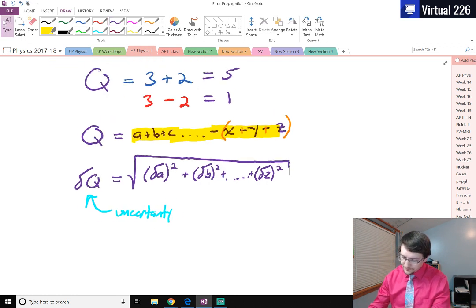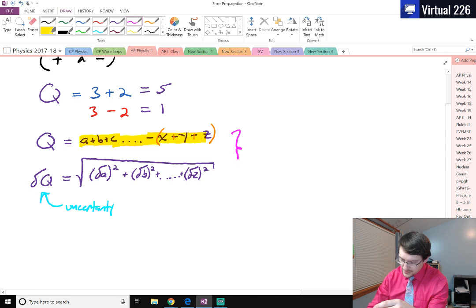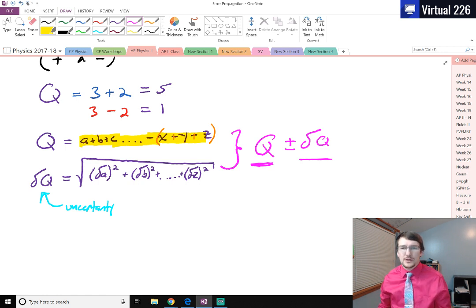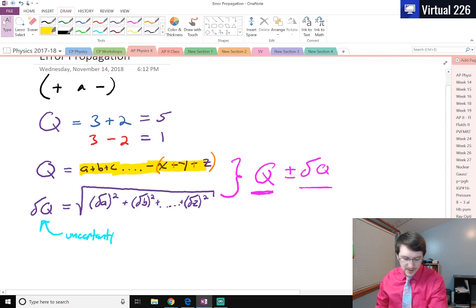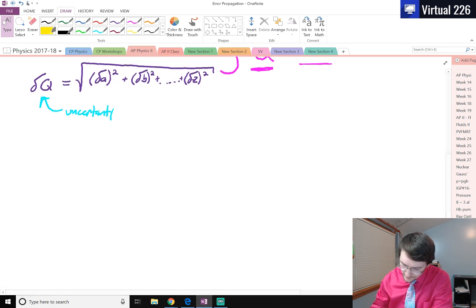What that allows us to do is say that if we took some measurements and added them together, then our actual measurement would be Q plus or minus the deviation of Q. This is the actual value we care about, and this is the deviation of that value, which gives us an idea of how precise we can be in knowing the true value. That's how we do error propagation with addition and subtraction.